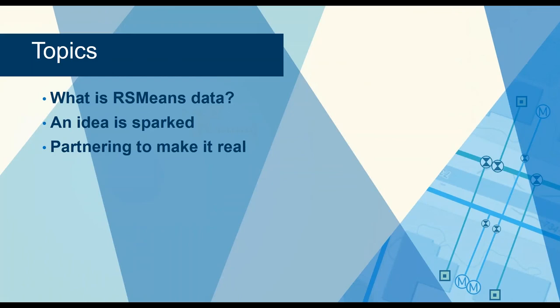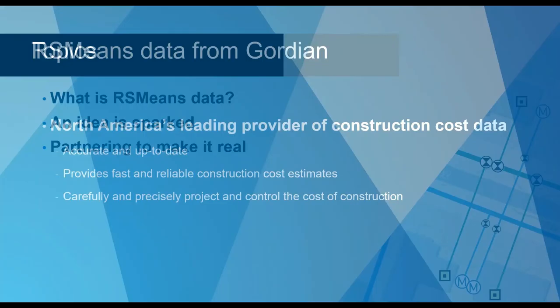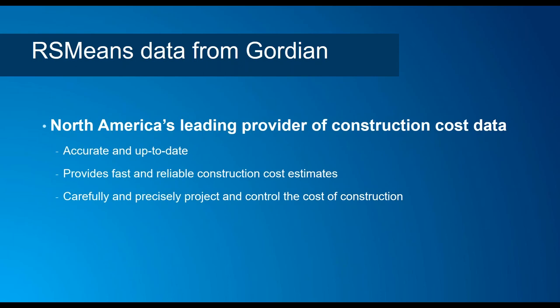Our topics today: what is RSMeans data, an idea is sparked, and partnering to make it real. Gordian is the world's leading provider of construction cost data and they publish RSMeans data. RSMeans data is accurate and up-to-date — it provides fast and reliable cost estimates and allows you to precisely project your construction costs.